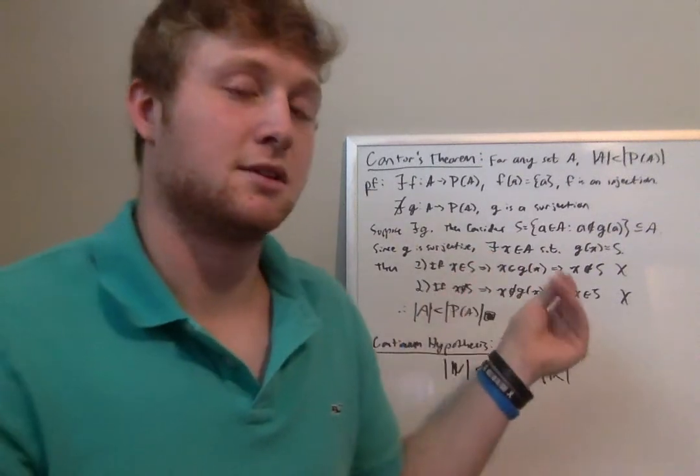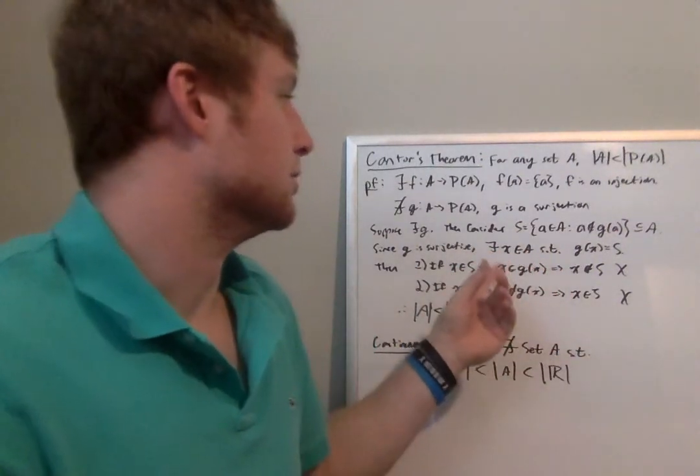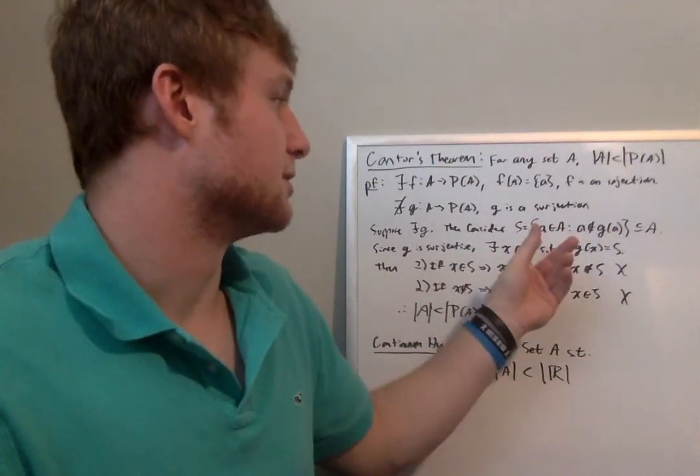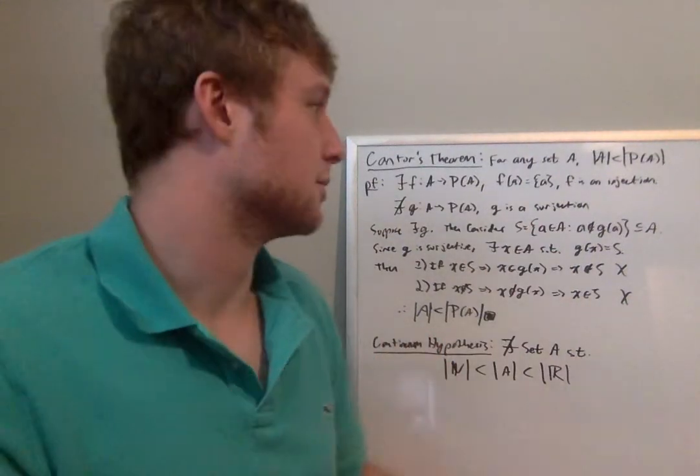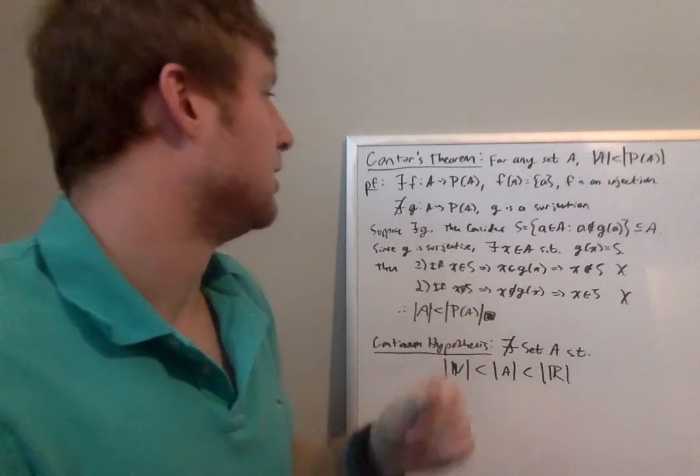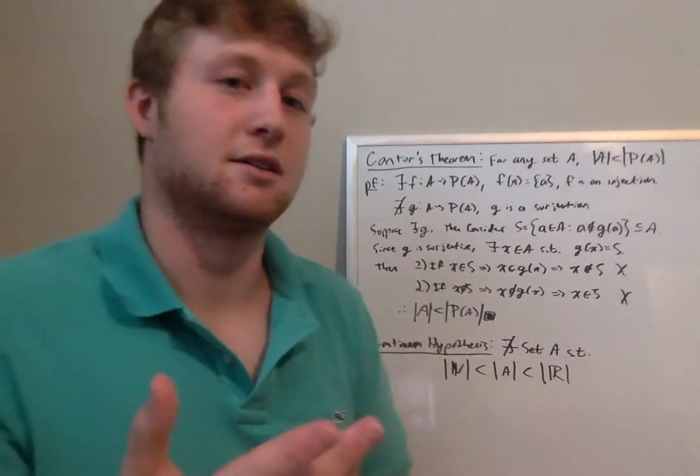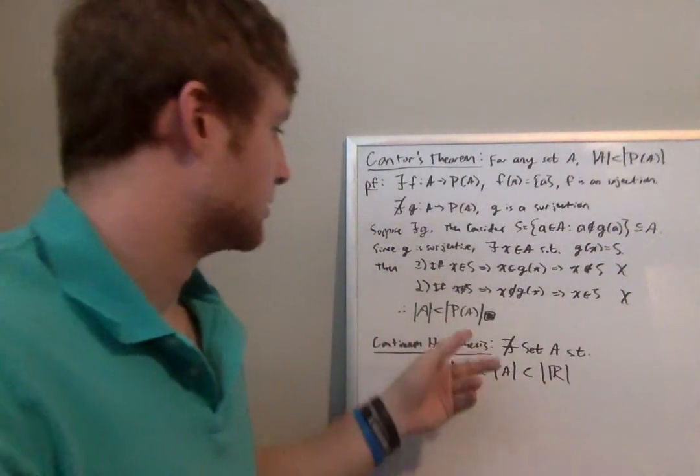There must be some element in A whose mapping is this set S. Then we develop this contradiction where that element, which we call X here, must both be in the set and not in the set.